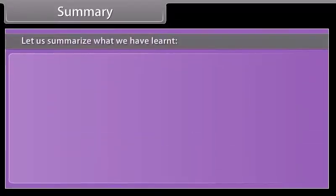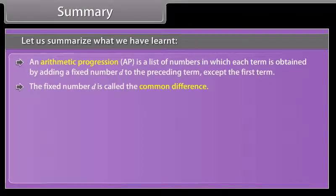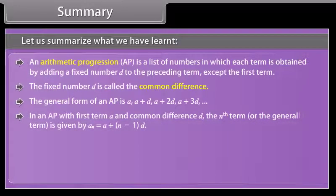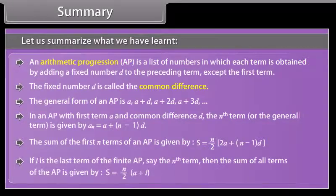Let us summarize what we have learned. An arithmetic progression (AP) is a list of numbers in which each term is obtained by adding a fixed number d to the preceding term, except the first term. The fixed number d is called the common difference. The general form of an AP is a, a+d, a+2d, a+3d, and so on. The nth term is given by a(n) = a + (n-1)×d. The sum of first n terms is S = n/2 × (2a + (n-1)×d). If l is the last term, then S = n/2 × (a + l).